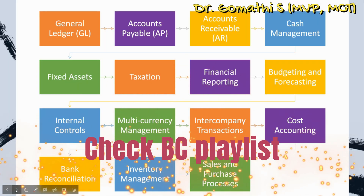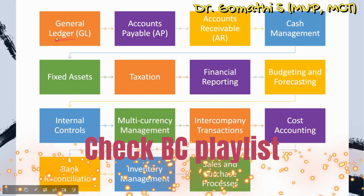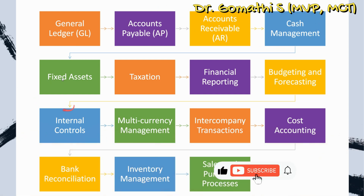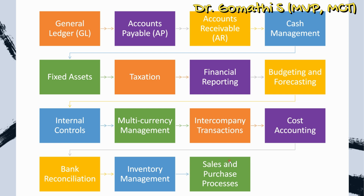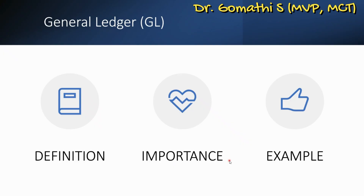These are the highlights of the concepts which we will be discussing: general ledger, accounts payable, accounts receivable, cash management, fixed assets, taxation, financial reporting, budgeting and forecasting, internal controls, multi-currency management, intercompany transactions, cost accounting, bank reconciliation, inventory management, and sales and purchase processes. These are the top 15 accounting concepts which you should know as a functional consultant.